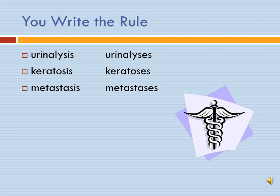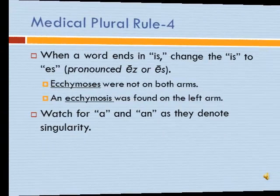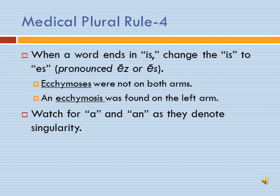Now write this rule. Urinalysis is singular; urinalyses is plural. Keratosis is singular; keratoses is plural. Metastasis is singular; metastases is plural. This medical plural rule: when a word ends in I-S, change the IS to ES. For example: ecchymoses were not on both arms; an ecchymosis was found on the left arm — we're talking about bruises. Watch for words like 'a' or 'an,' which denote singularity, and 'was' versus 'were,' to help determine singular or plural.